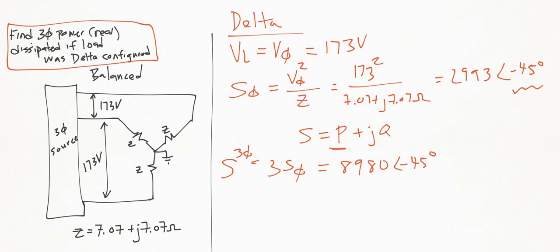The thing to remember is that only gives us the apparent power. We need the true power, or sometimes called the active power. To get that, the power factor, which I'm going to denote as pf, is equal to the cosine of this angle, which is -45°. It's equal to true power P over apparent power S.